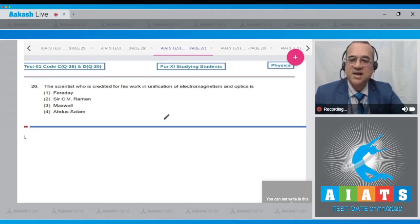Question number 26 says that the scientist who is credited for his work in unification of electromagnetism and optics is Faraday, CV Raman, Maxwell, or Abdus Salam.